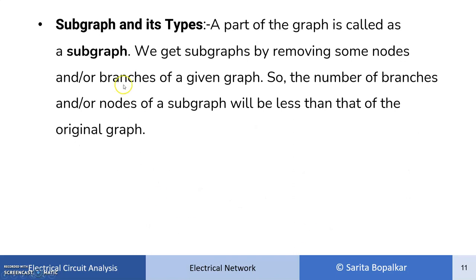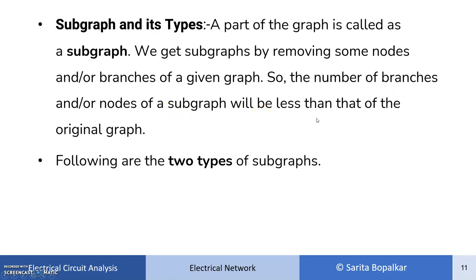The next important definition is subgraph and its types. A subgraph is a part of a graph. We get a subgraph by removing some nodes and some branches. A single node or a single branch can also be a subgraph. So the number of branches and nodes of a subgraph will be less than the original graph. There are two types of subgraph: one is tree and another one is co-tree.